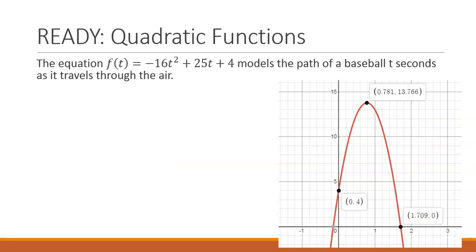When the equation is graphed, we can see that the domain, which is all of our x values, is 0 to 1.709, or we can write that as an inequality, 0 is less than or equal to x, which is less than or equal to 1.709.